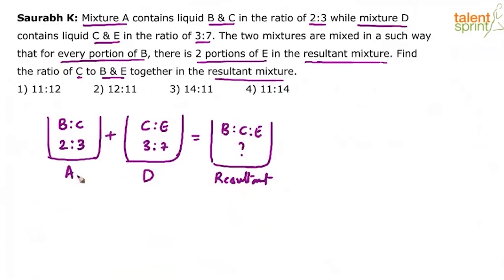Now, how are these two mixed? Are the quantities equal or what is the criteria? Well, nothing has been given about quantities but what we know is for every one portion of B, there are two portions of E. So if you take one part of B, you will take two parts of E and so on.